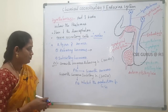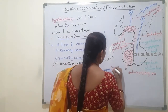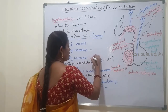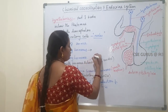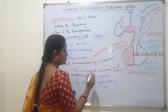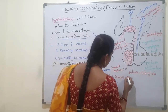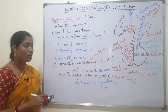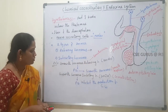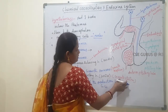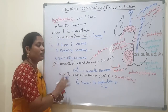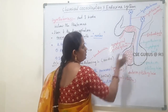Growth hormone is also called somatotrophin. Growth Hormone Releasing Hormone is also called somatocrinin. Growth Hormone Inhibitory Hormone is also called somatostatin. These are the other names. These hormones secreted by neurosecretory cells regulate the anterior lobe of the pituitary gland.